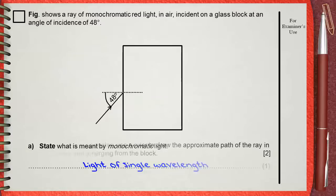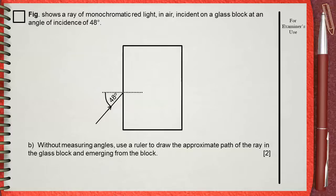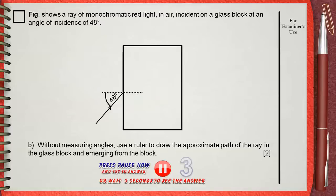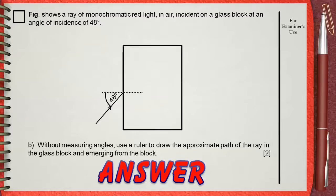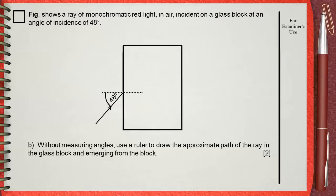Question B. Without measuring angles, use a ruler to draw the approximate path of the ray in the glass block and emerging from the block. In this question, we don't use angles. He just wants you to draw an approximate path of the ray.